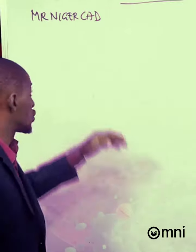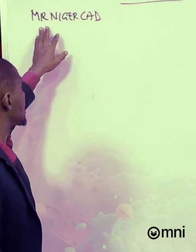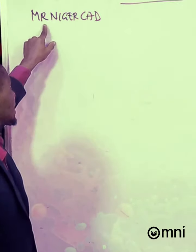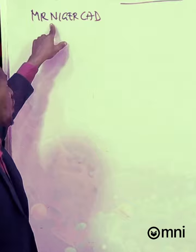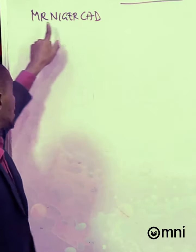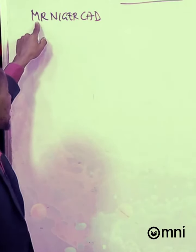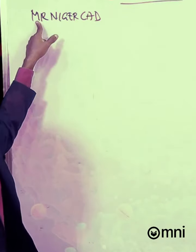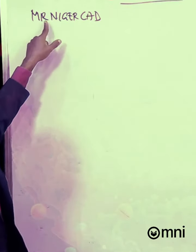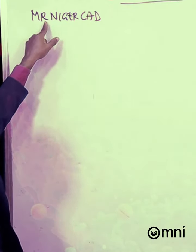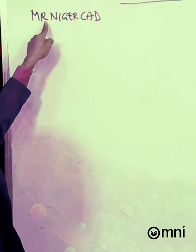What we have on the board here is pronounced Mr. Niger Card. Each of these letters stands for a particular word. The first letter, which is M, represents movement. The next one, which is letter R, represents respiration.